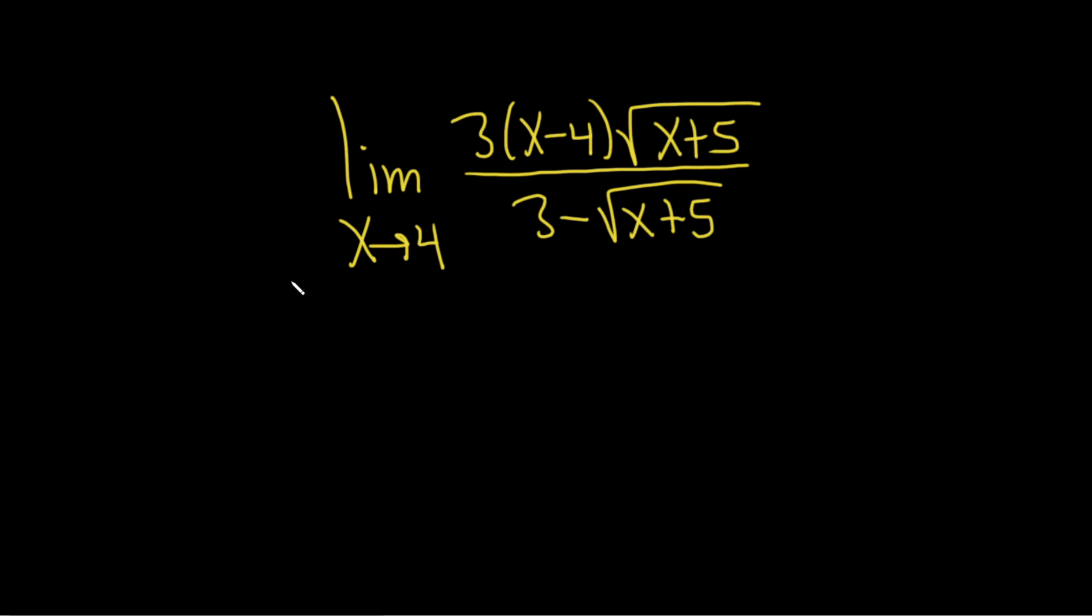Hi, in this problem we're going to evaluate the limit as x approaches 4 of this function here. So the first thing we want to do is plug in 4 and see if that works. And if you notice in this problem here, if you plug in 4 on the bottom part, you're going to get 3 minus the square root of 4 plus 5. That's the same thing as 3 minus the square root of 9, and the square root of 9 is 3, so 3 minus 3 is 0. So that doesn't work because we'll end up with a 0 on the bottom here. So we have to do something else.